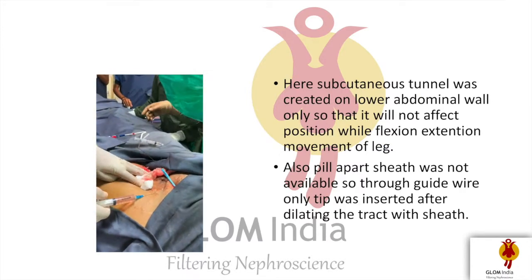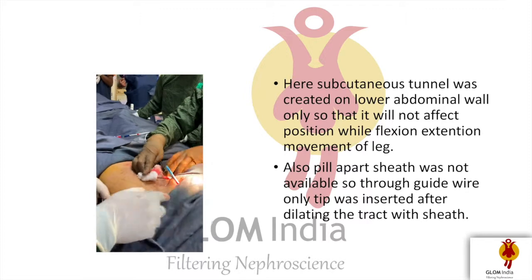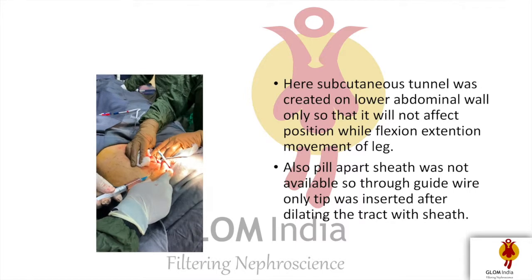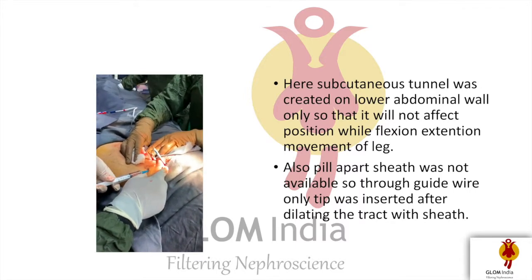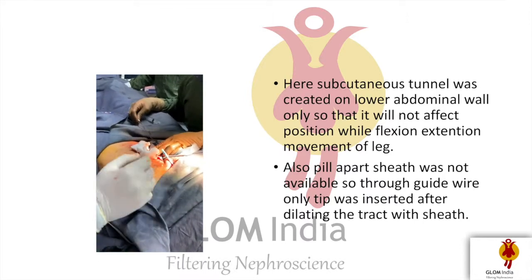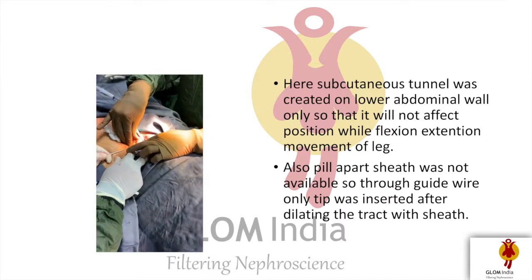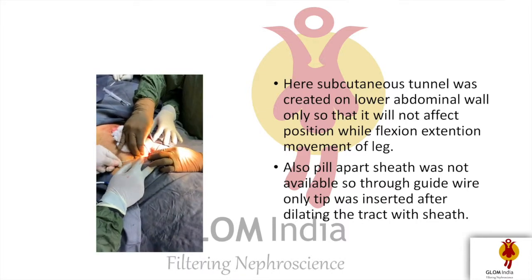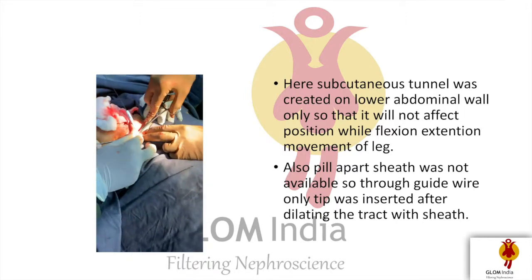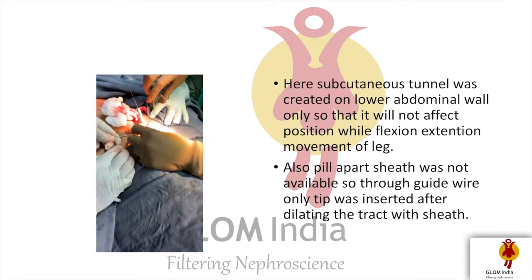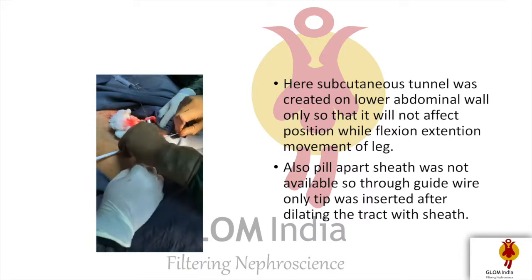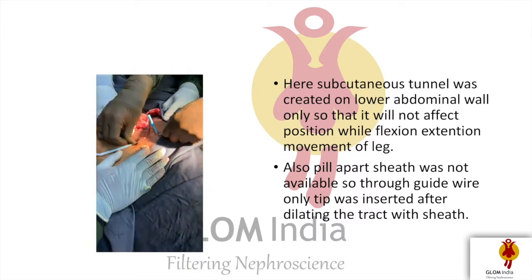A subcutaneous tunnel was also formed over the lower abdominal wall to avoid any effect on position during flexion and extension movement of the leg. Local anesthesia was given over the lower abdominal wall, and through that the femoral tunneled catheter was passed. An important issue here: during the previous insertion, a peel-apart sheath was required but was not available. So a 16 French sheath was used as a dilator.